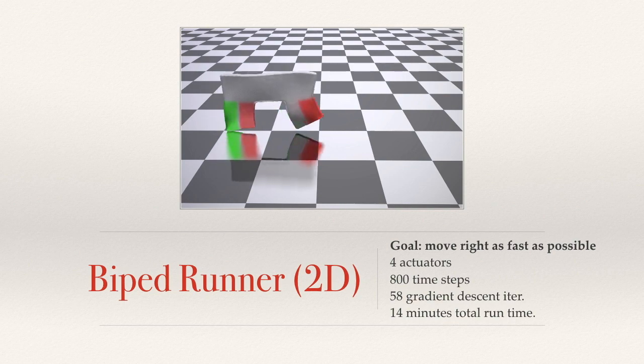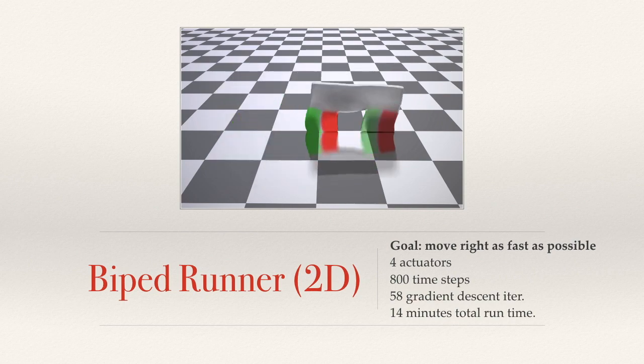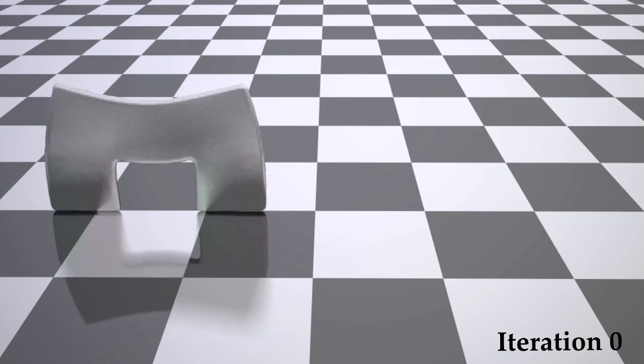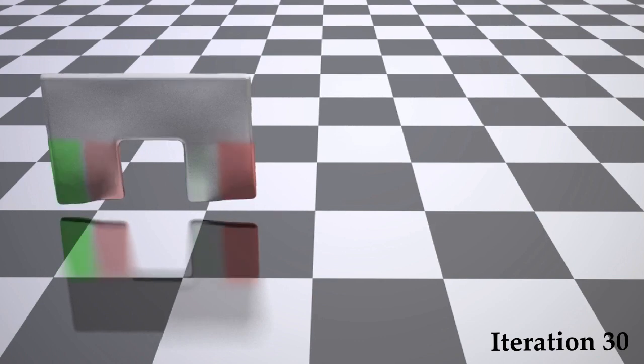It has four actuators, and the goal is to move right as fast as possible. The initial controller does nothing, trapping the soft robot at the starting point.